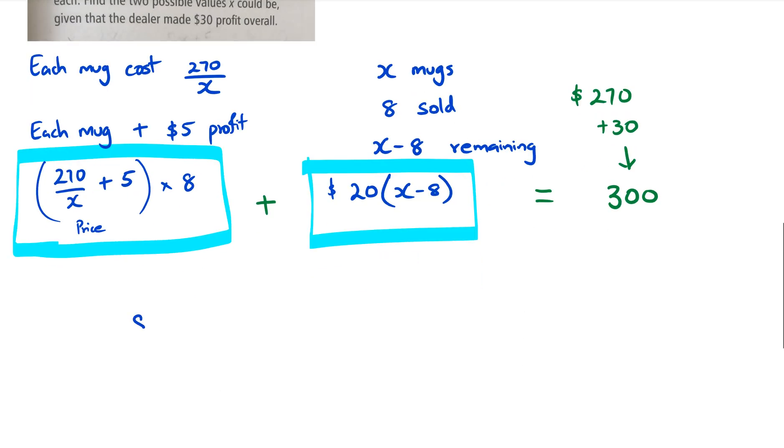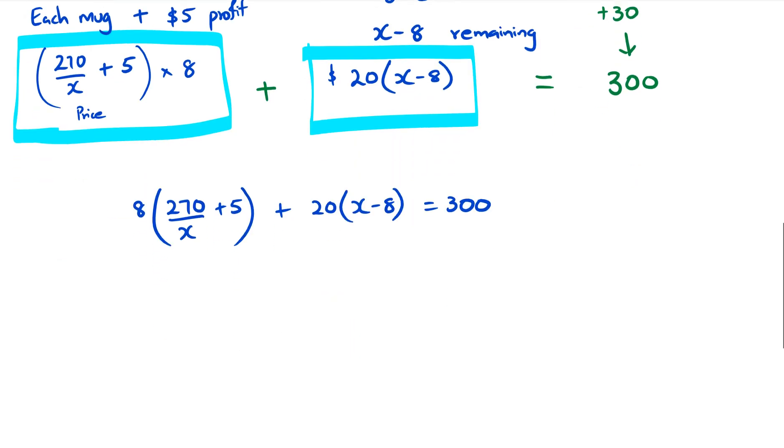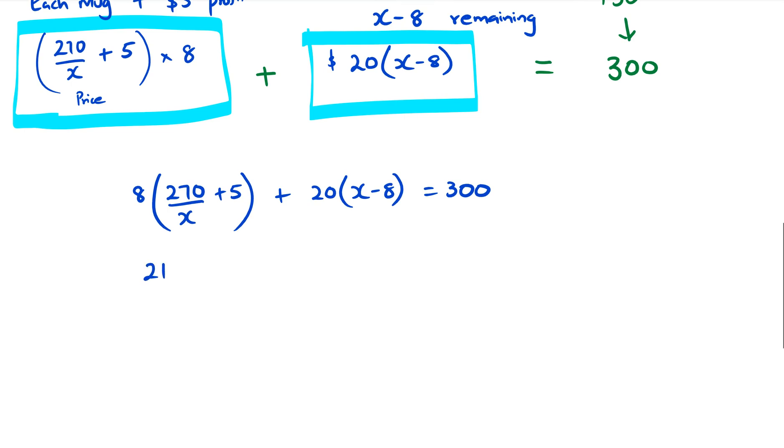This is what the equation looks like: 8(270/X + 5) + 20(X - 8) = 300. This is the most challenging part because once you get this equation, you can start working away at it. Expanding the brackets: 2160/X + 40 + 20X - 160 = 300.